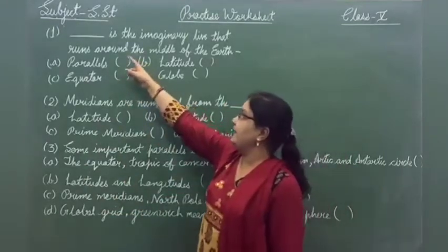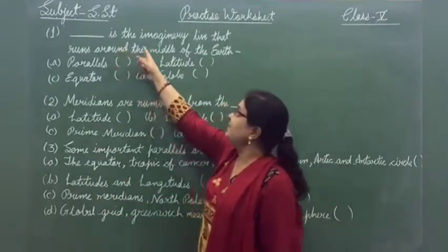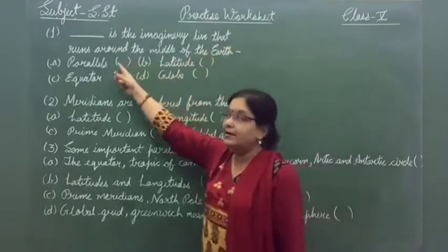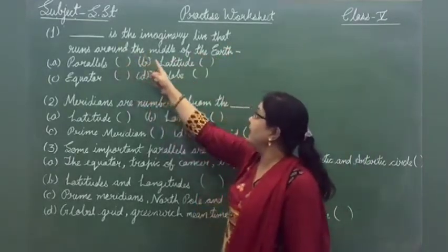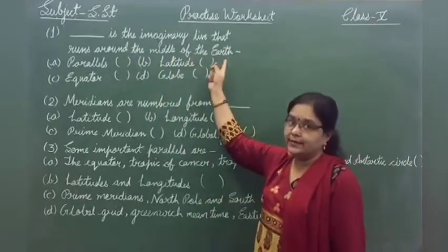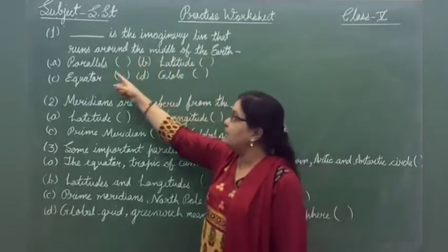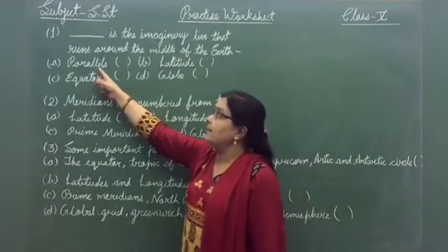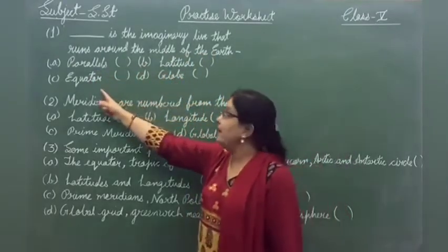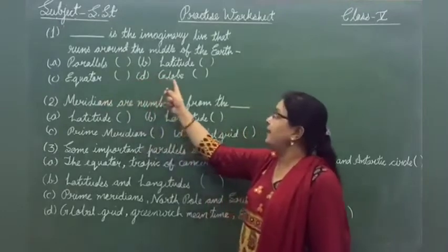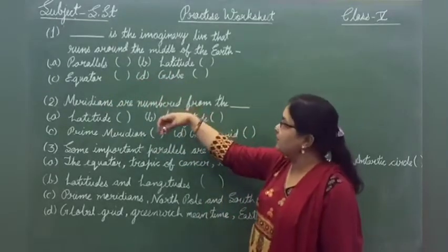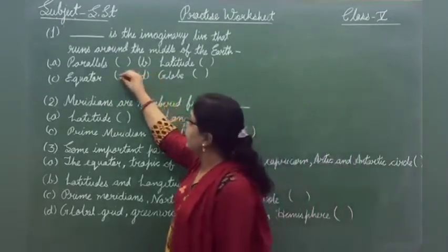Question number 1: dash is the imaginary line that runs around the middle of the earth. The four options are parallels, latitude, equator, and globe. The correct option is equator.